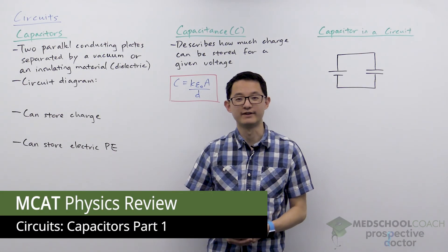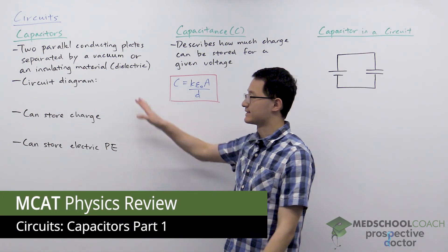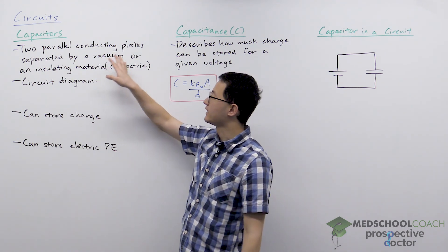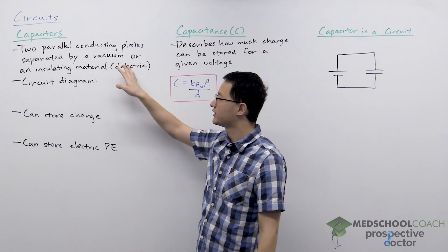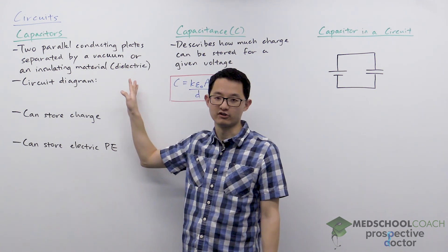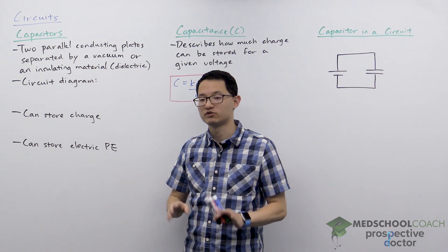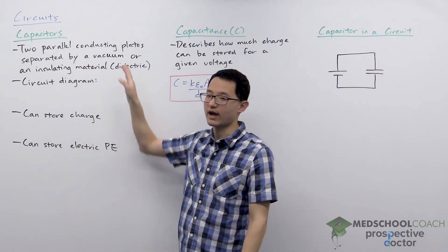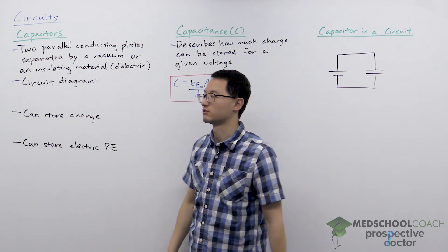In this video we're going to go over capacitors. A capacitor is a circuit element that consists of two parallel conducting plates separated by a vacuum or an insulating material. The insulating material is also called a dielectric. For now we're going to assume that there is a vacuum, and later we will incorporate the insulating material.